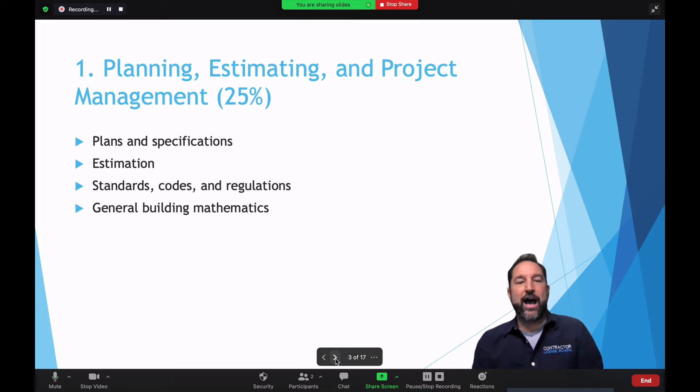So first of all, you have the Planning, Estimating, and Project Management. Now keep in mind, as you can see there, that 25% of what's going to be on the state exam has to do with planning, estimating, and project management. So you're going to need to know information on plans and specifications, on estimation. How do you estimate that job? How do you set up that job to make good money? One of the key factors in being able to be a successful construction business is properly estimating that project so you could produce income. The other one is knowing standards, codes, and regulations. So make sure you understand your trade, specifically as we're dealing with the A trade, what entails the standards and codes and regulations you need to know.